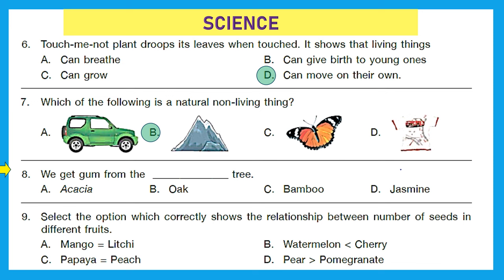Question 8: we get gum from the dash tree. Do you know that gum is obtained from the stem of acacia — that is the kicker tree? Option A is the right answer.